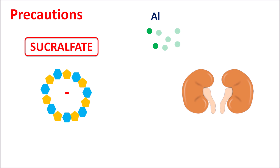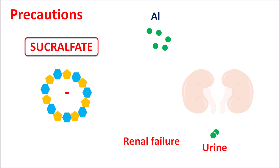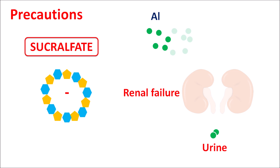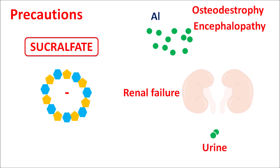The aluminium ions released from sucralfate are excreted through the renal system into the urine. However, in patients with chronic renal failure, this excretion is inhibited so that more aluminium ions accumulate, resulting in aluminium toxicity. This may result in osteodystrophy, osteomalacia, as well as encephalopathy — meaning both bone and brain can be affected by aluminium accumulation.